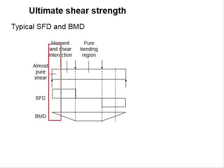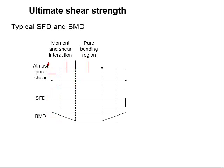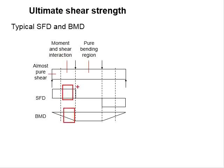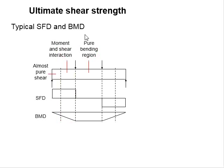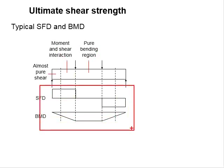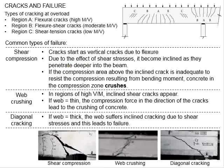For the regions at the support, there is a high degree of shear force but a low degree of bending moment — this is the region of almost pure shear. The regions in between have both shear force and bending moment, where the moment and shear interact. Due to the different combinations of loads acting on the member, the beam behaves differently along these bands, specifically in terms of cracks and failure.